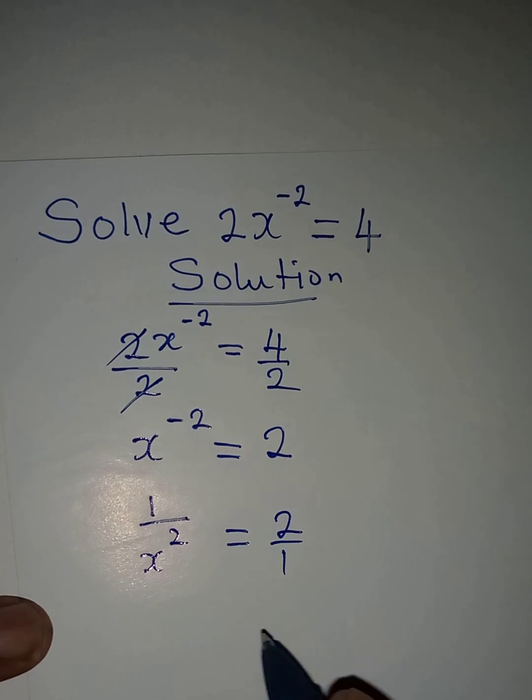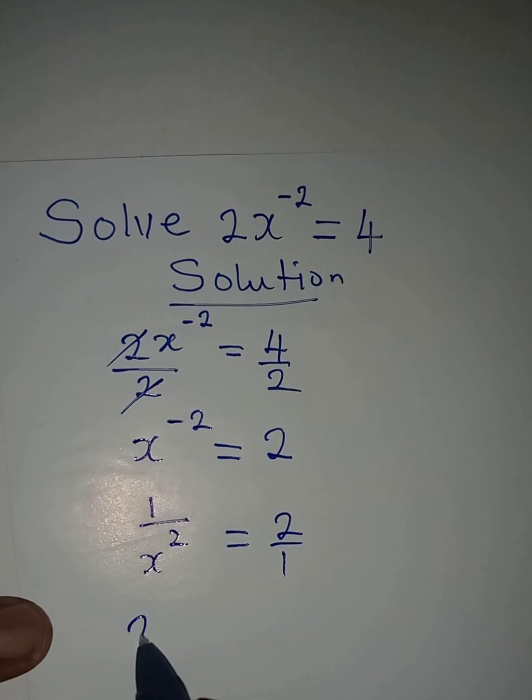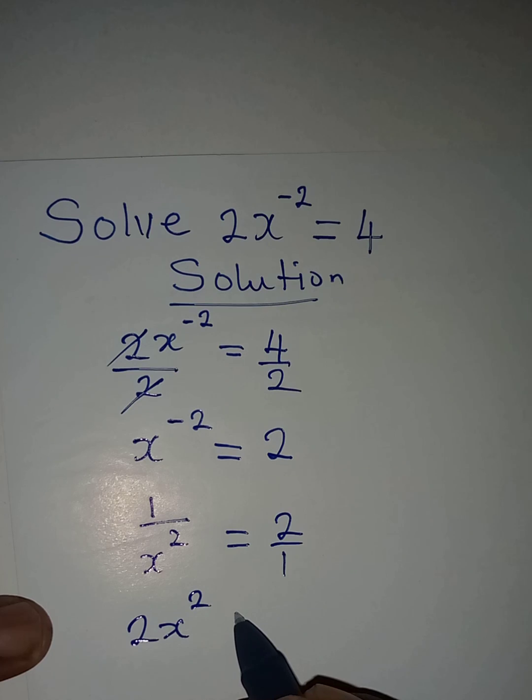So from here we can simply cross multiply, and then we'll have 2x squared is equal to 1.